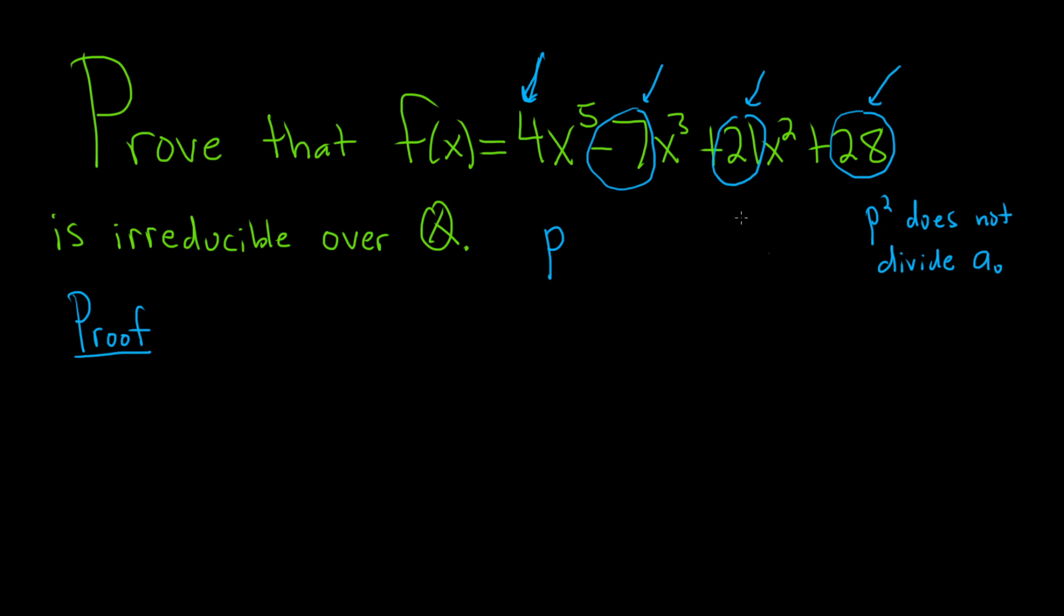And then when you square that prime, it can also not divide the constant term. If all of that is satisfied, then your polynomial is irreducible over the rationals.